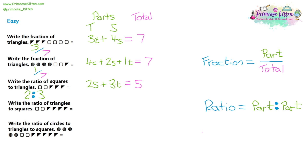Let's try question four. We have two squares and four triangles — total six. To write it as a ratio it's part to part, and the order matters: whichever is mentioned first in the question comes first. The question mentions triangles first, so we write four, then squares second with two. The ratio is four colon two, with the colon symbol in between.